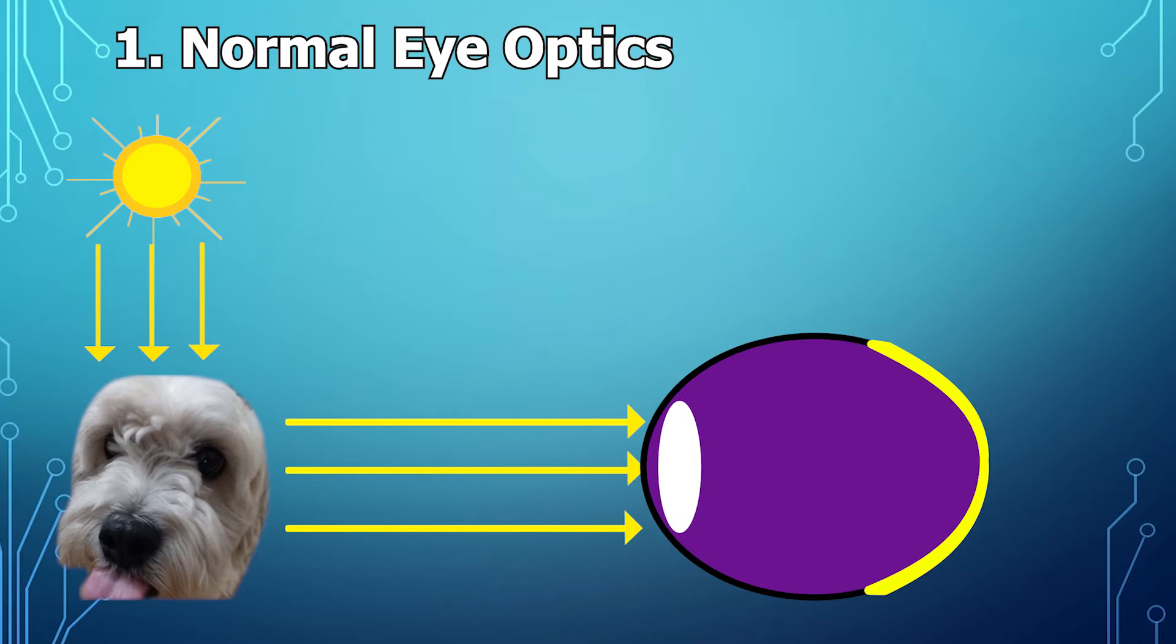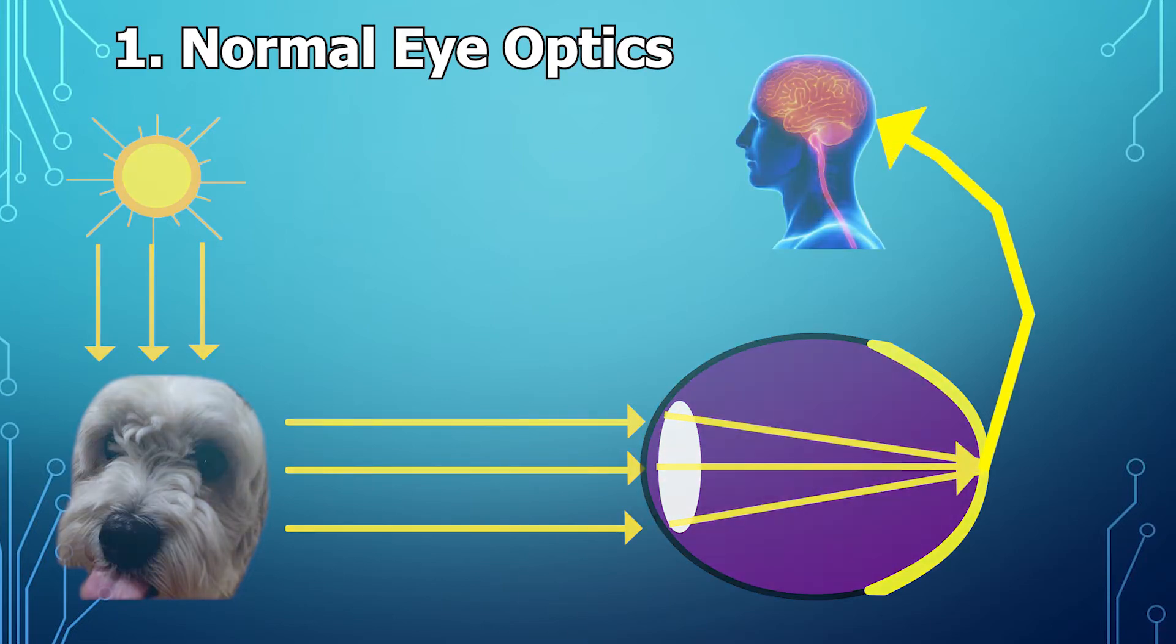Then the light passes through the first layer of the eye called the cornea, then it passes through this little guy called the lens, then it gets inverted and focused on the back of the eye called the retina. And the retina sends the signals from the light to your brain to tell you there's a cute angel of a puppy on your screen.